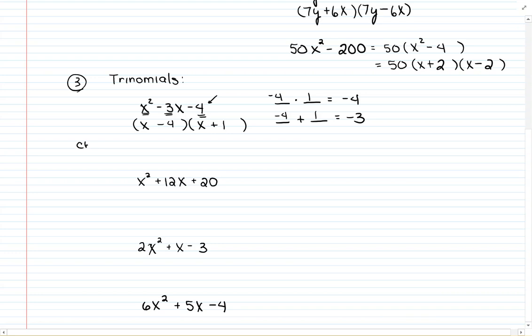As a check, I can FOIL this out. x times x, that's the first. Outside, x times 1. Inside, negative 4 times x. And then last, negative 4 times positive 1. When I combine these up, I have x² - 3x. Notice that's where my x is. And then the minus 4. So, it does give me back the original.